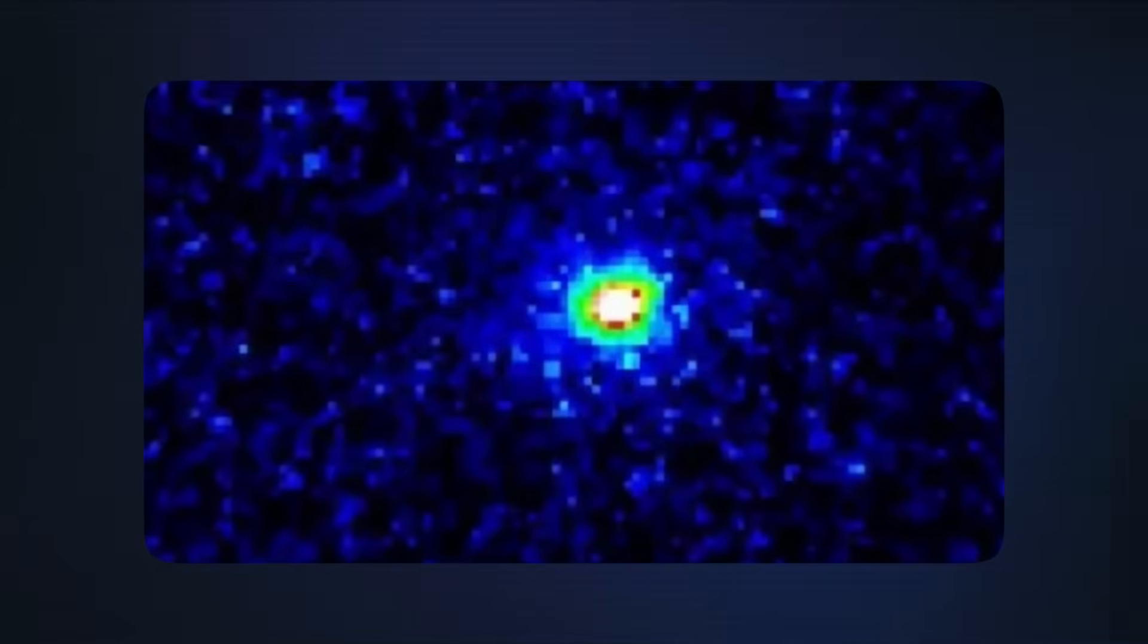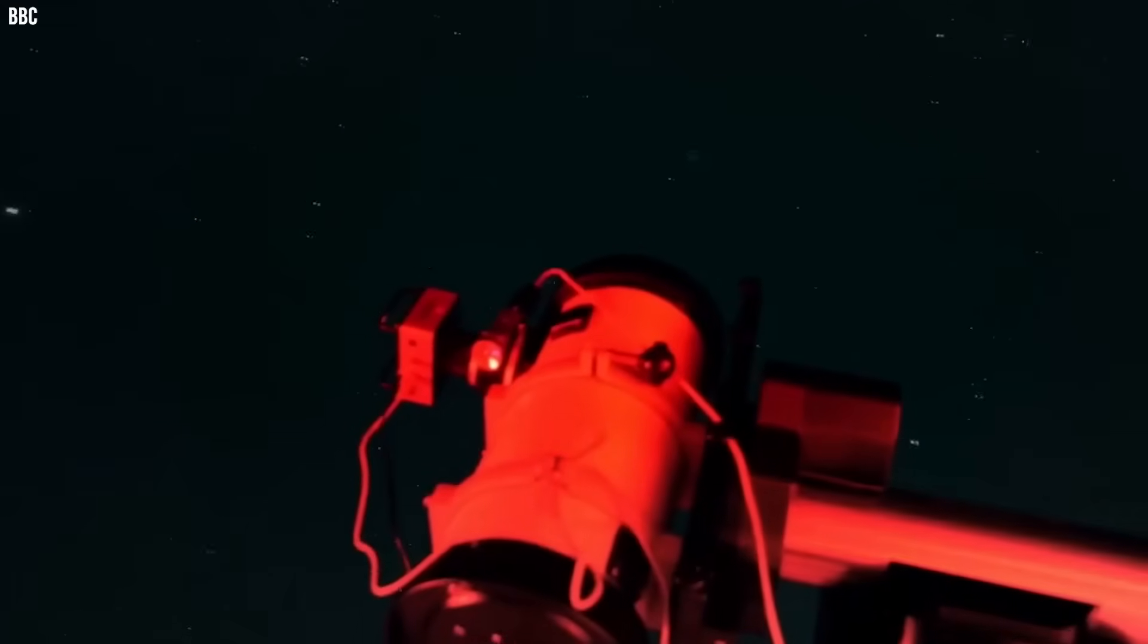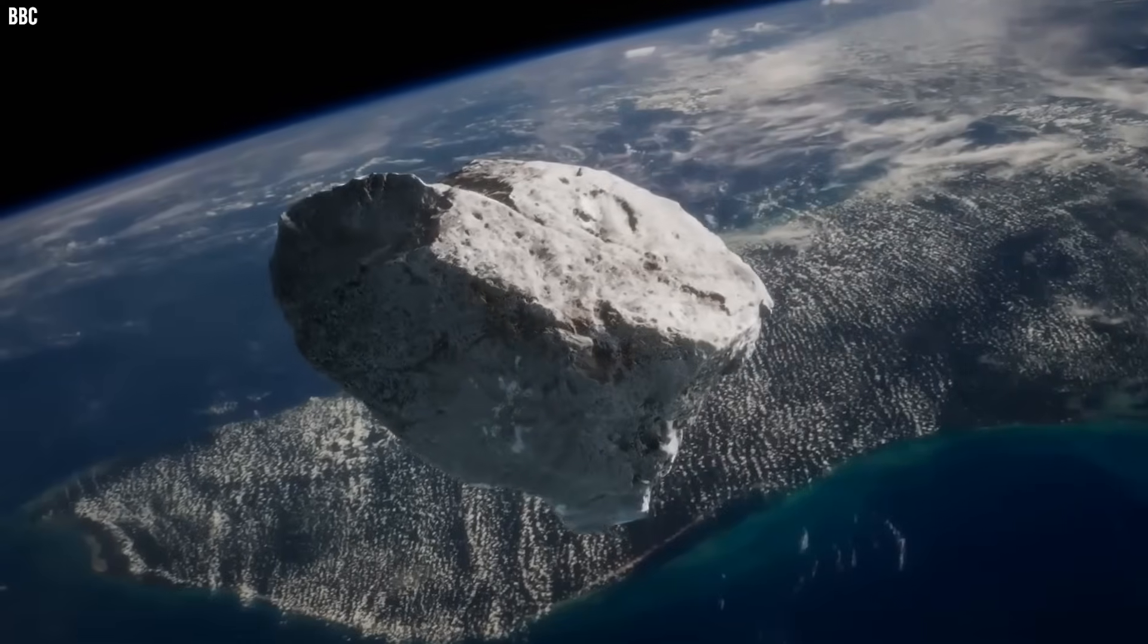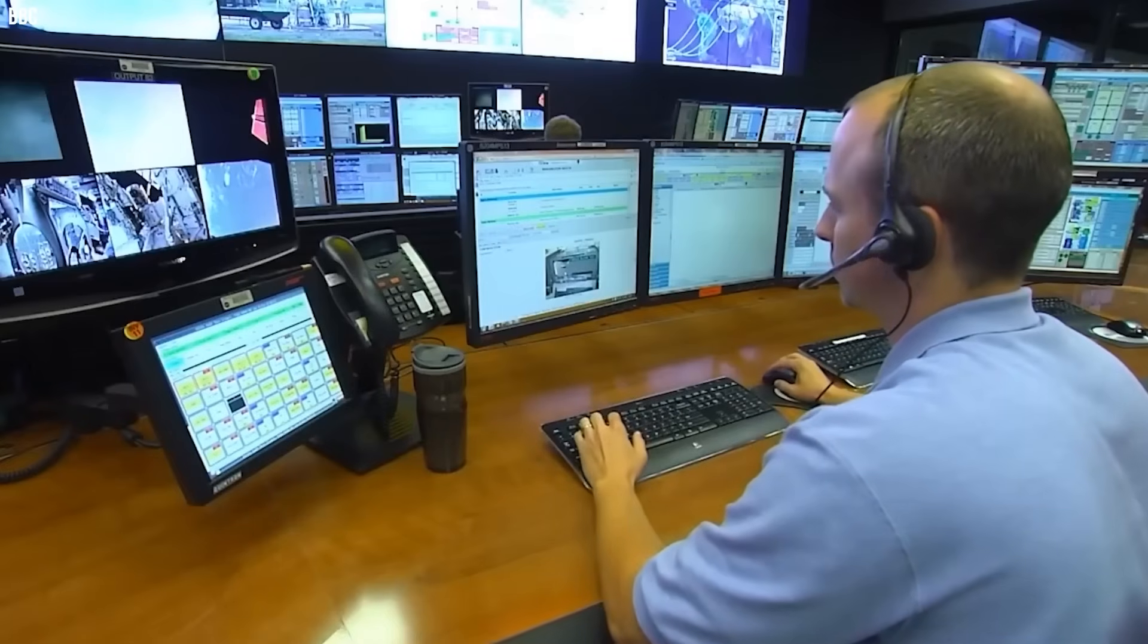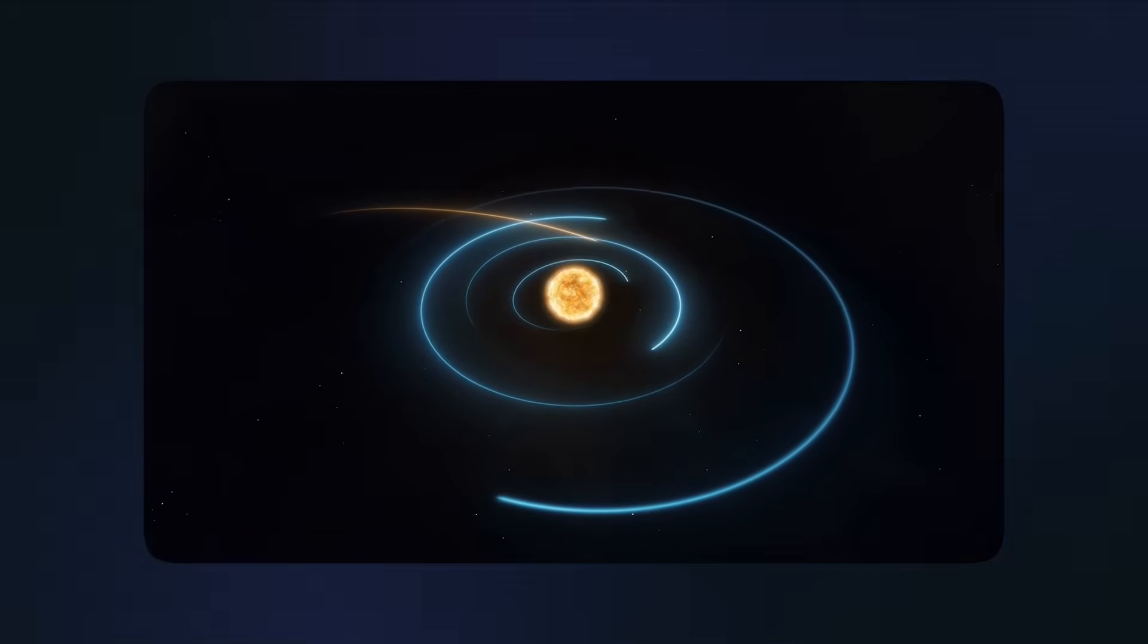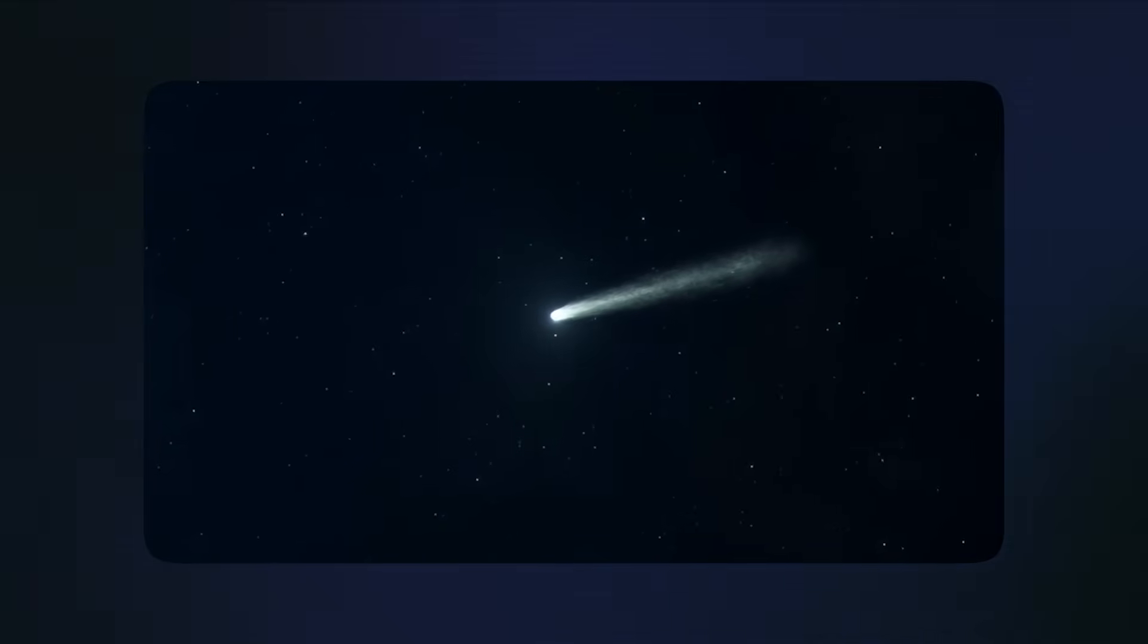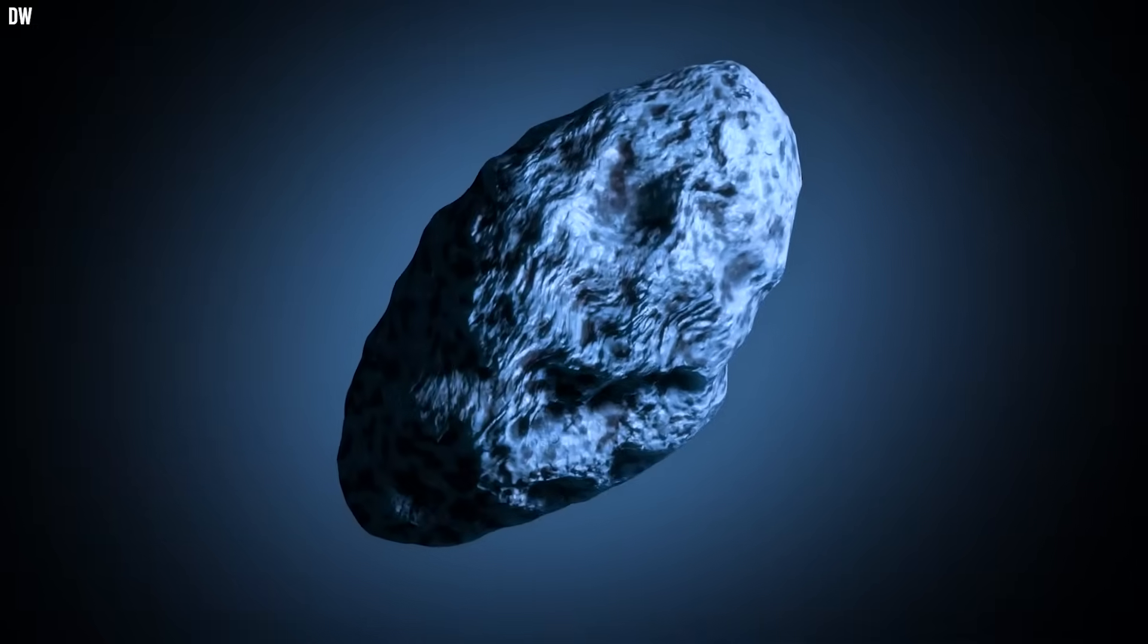An amateur astronomer just captured something in space that has scientists completely freaking out. What started as a routine night of stargazing turned into the discovery of 3i Atlas, an object from another star system that's breaking every rule of physics we know. This thing has a perfectly straight tail, millions of kilometers long, moves in ways that should be impossible, and behaves nothing like any comet we've ever seen before.